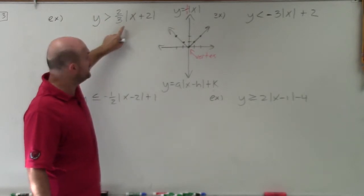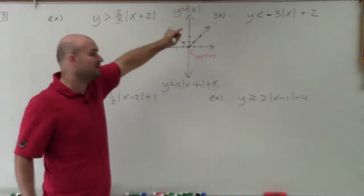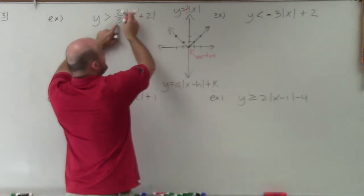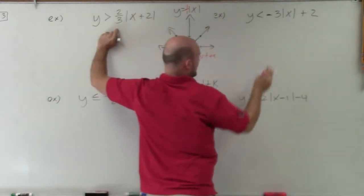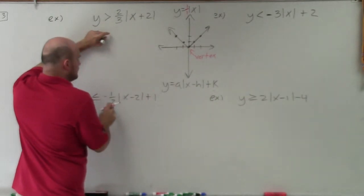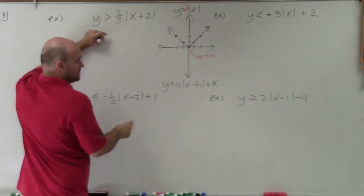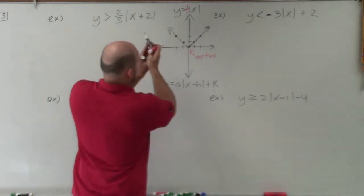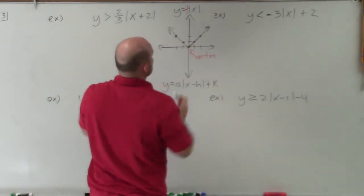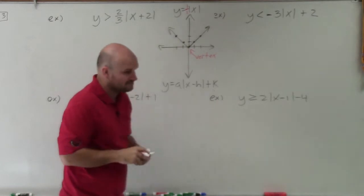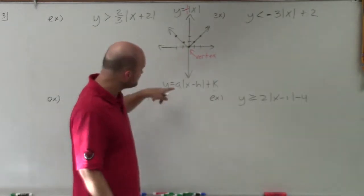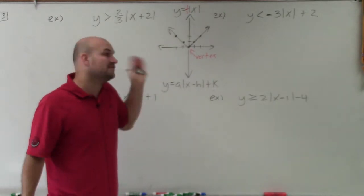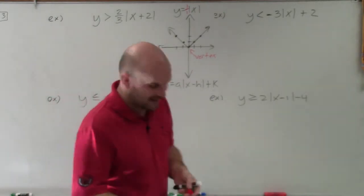As long as you have an a and your equation is in this format, your a represents your slope from your vertex to your next point. For instance, this one would be, instead of going up 1 over 1, it'd be up 2 over 3. This one would be down 1 over 2. We're going to go to the left 2 and right 2, because it goes up and over in both directions. This is only true when you have an equation in this format.